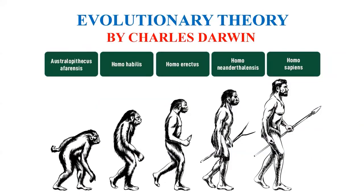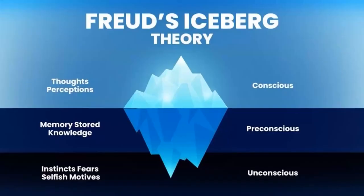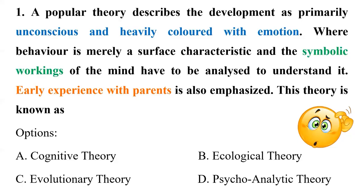Then we have evolutionary theory, given by Charles Darwin, who proposed that species change over time, give rise to new species, and share common ancestors. Then we have Freud's psychoanalytic theory, given by Sigmund Freud, which explores the unconscious mind, the role of emotions, the symbolic nature of thoughts and behavior, and the influence of early childhood experiences in human development.